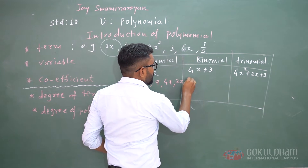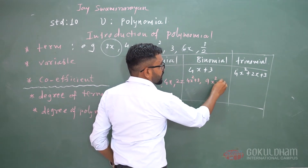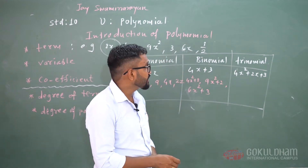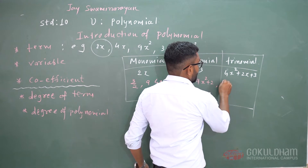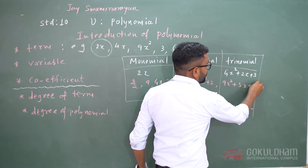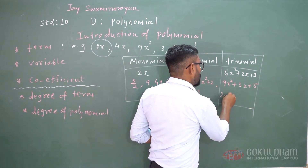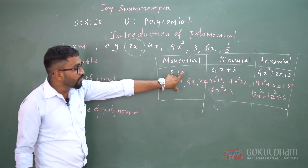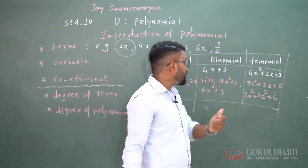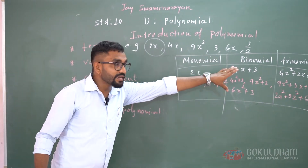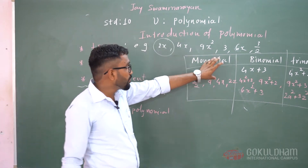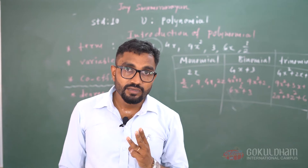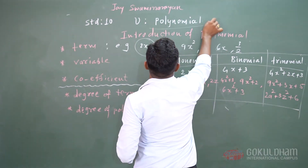Examples of binomial: 4x square plus 3, 9x square plus 2, 6x square plus 3, etc. Examples of trinomial: 9x square plus 3x plus 5, and 2a square plus 3x square plus 6. We classify monomial, binomial, and trinomial based on how many terms are present. Monomial means only one term, binomial means two terms, trinomial means three terms, and more than three terms is called polynomials.